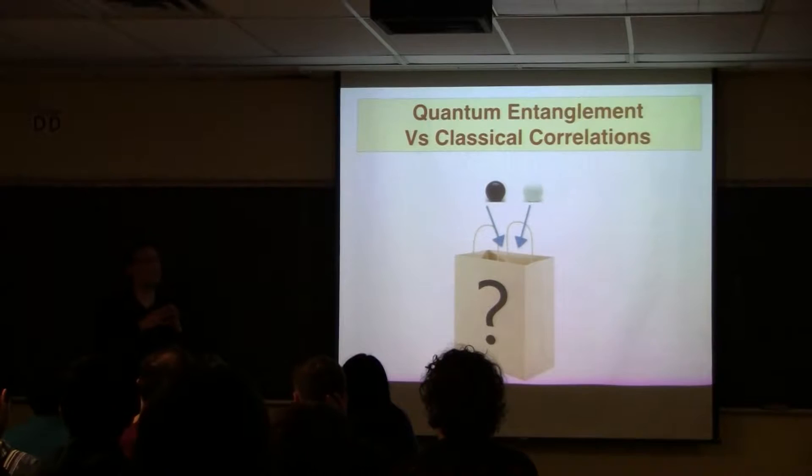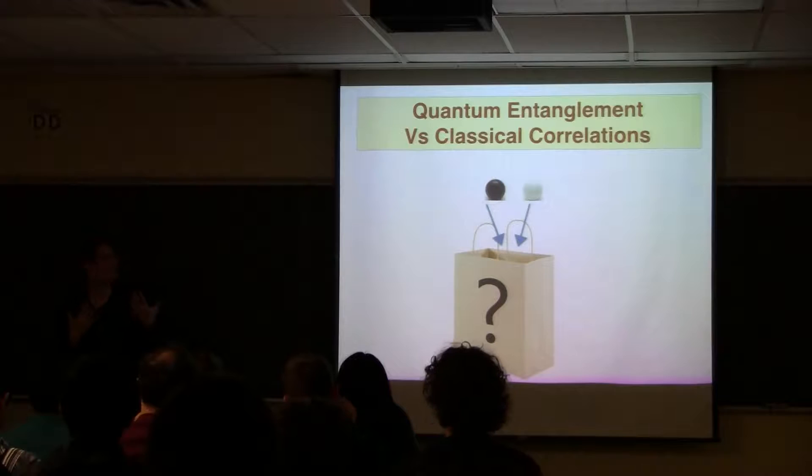Schrodinger, who talked about entanglement for the first time, used a word more like intertwined. Apparently, I don't speak German, but I've been told by German people. Quantum entanglement, though, is the name that we know it in English by.